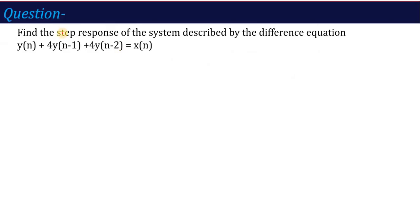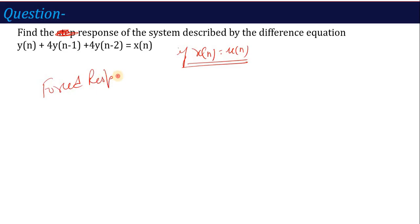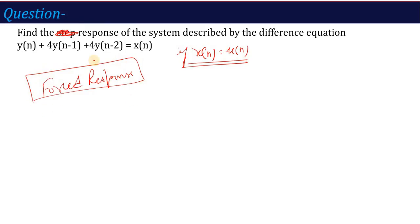If the question is defined as: find the response of the system described by the difference equation when x[n] = u[n], then we are calculating the forced response. Since there is no initial condition given, we will not calculate the natural response — we will only calculate the forced response.